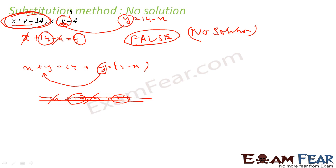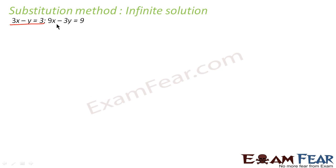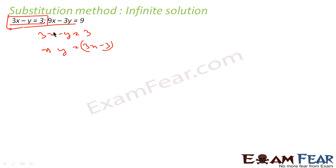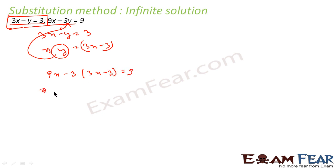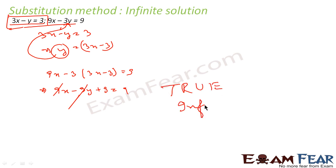Let's take one more example with infinite solution: 3x minus y equals 3 and 9x minus 3y equals 9. From the first equation, y equals 3x minus 3. I substitute this into the second equation: 9x minus 3 times (3x minus 3) equals 9, giving 9x minus 9x plus 9 equals 9. The x terms cancel and we get 9 equals 9, which is always a true statement, so this has infinite solutions.